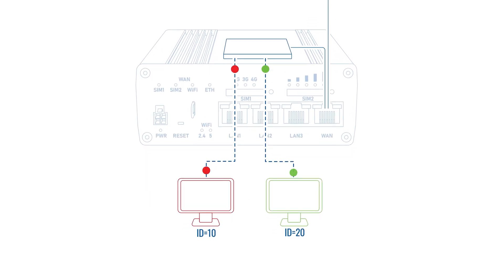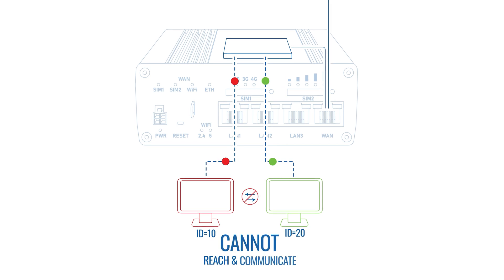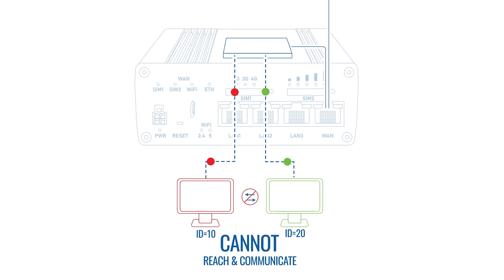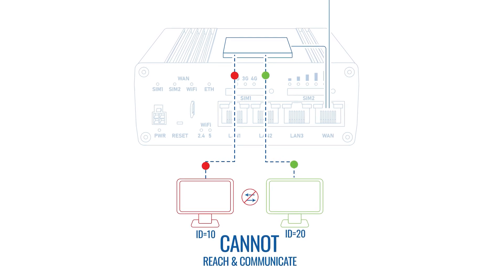For this reason, devices from different networks cannot reach and communicate with one another. The reason people want different local area networks on a single device can vary, though it's usually related to the privacy or security of internal data that gets to be shared within that one network.